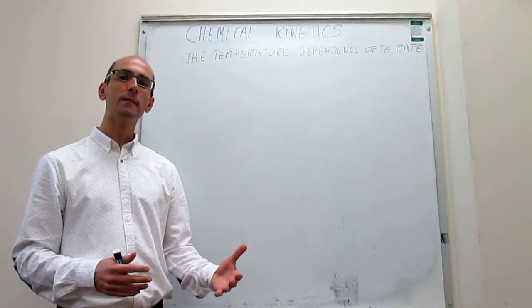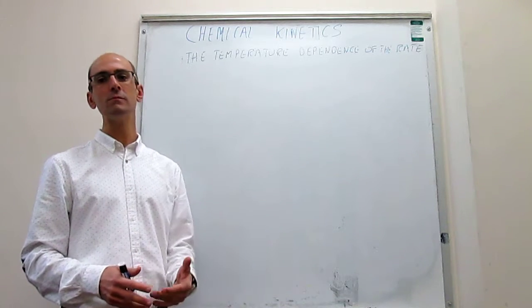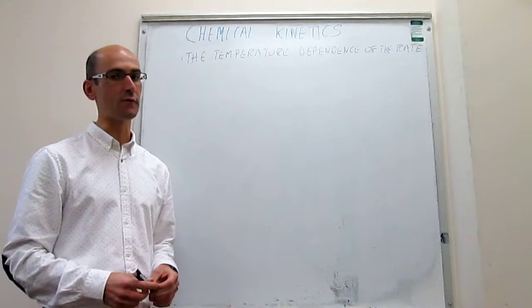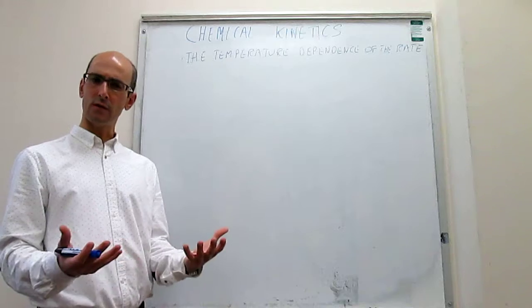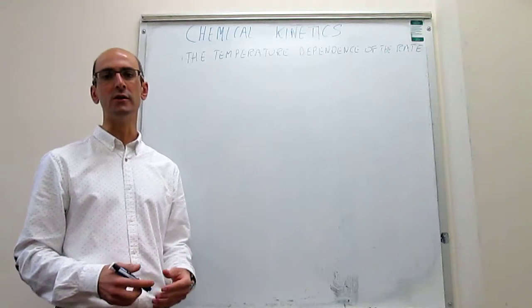But we also know that the rate of a chemical reaction depends on temperature. It's quite customary that when you elevate the temperature of a reaction, generally the rate is higher, the reaction goes faster. So with what we know, the question is how does the temperature enter the rate?